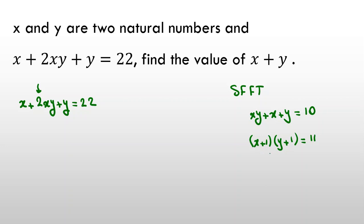So it will be 11, and then we can check the cases. But the problem here, we want to use Simon's favorite factoring trick, but here we have 2xy. What should we do when we have coefficient? Pause the video and try to do it by yourself.